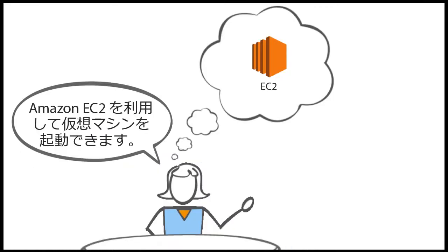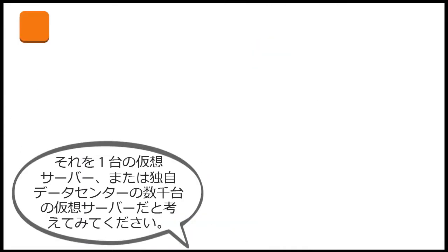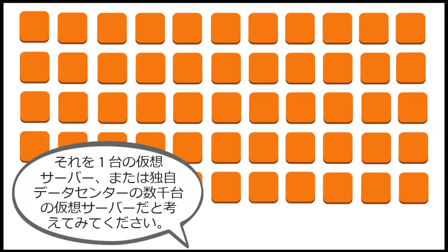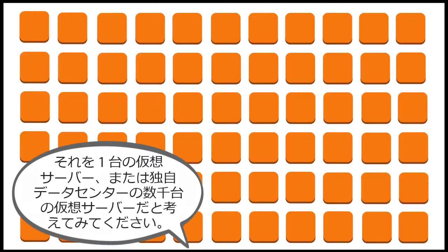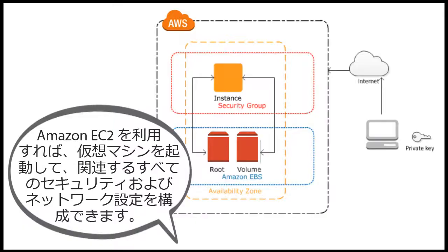You can use Amazon EC2 to launch a virtual machine — think of it as a virtual server, or thousands of virtual servers, as your own data center. You can configure all of the associated security and networking settings.